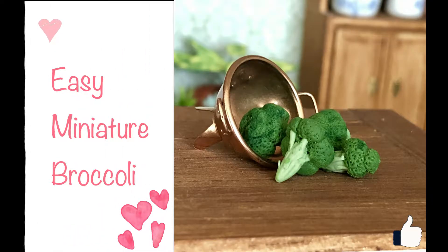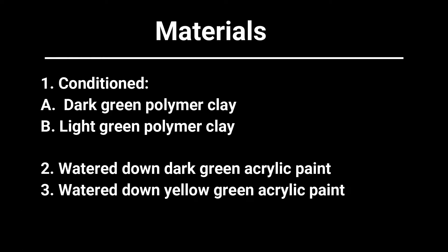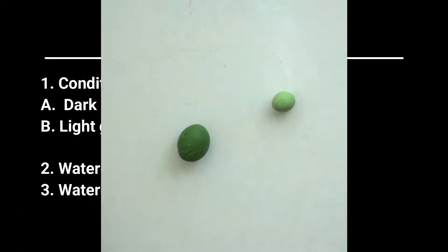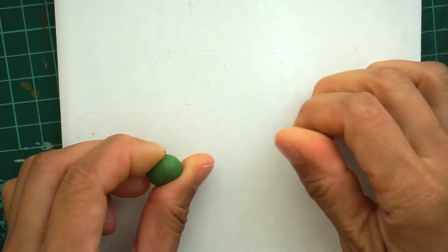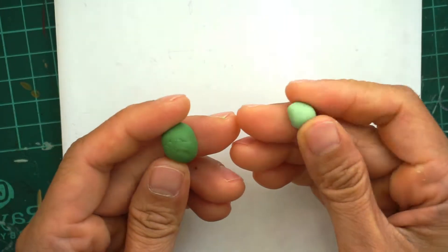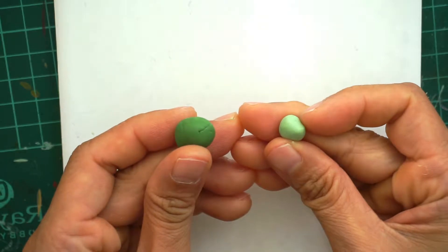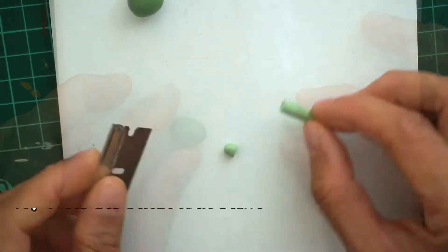Hello, today I'm going to show you how to make an easy broccoli project. Here are the materials. This project is really simple - you just need to condition a dark green and a lighter green polymer clay.